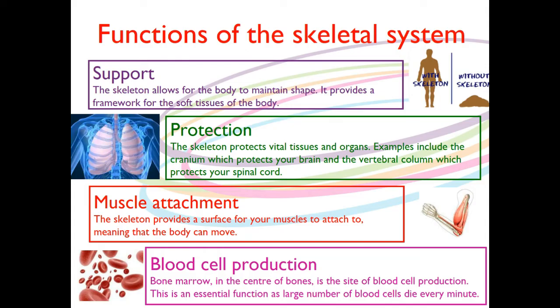The fourth one is one that you might not know about: blood cell production. Your bones actually make your blood, which sounds weird. The bone marrow in the center of the bones is the site of blood cell production. This is essential as a large number of blood cells die every minute, so we've got to keep making new ones. Without that, we wouldn't be able to get oxygen around the body to be able to exercise.